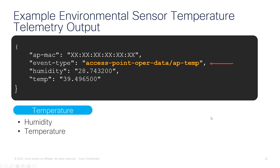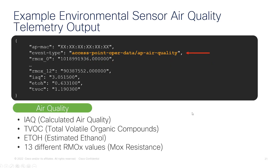Here I just wanted to show you the example sensor telemetry output for the temperature data. We can see the humidity and the temperature. For the air quality telemetry, we can see the calculated air quality, the TVOC estimated ethanol value, and 13 different rmox values.